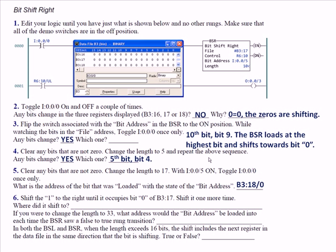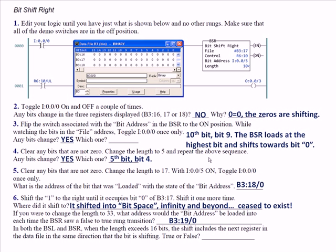Shift the 1 to the right until it occupies bit 0 of B3:17 — that's the last position. Shift it one more time and it shifts into bit space: infinity and beyond, ceasing to exist, the bottomless bit basket. If you were to change the length to 33, the bit address would be loaded into B3:19 bit 0 — the highest bit in the file. Those are the exact same 33 bits worked with using BSL; the difference is you load the highest instead of the lowest and shift in the opposite direction. For both BSL and BSR, when the length exceeds 16 bits, the shift includes the next register in the data file in the same direction the bit is shifting — true.